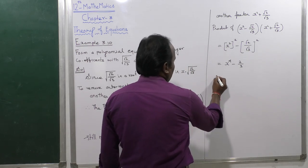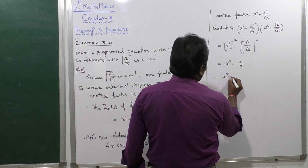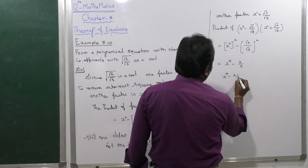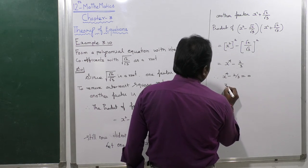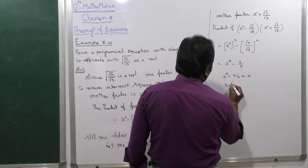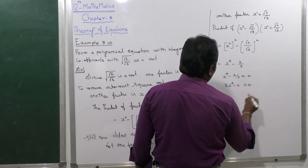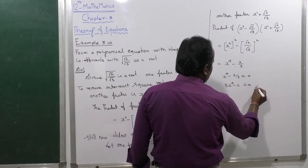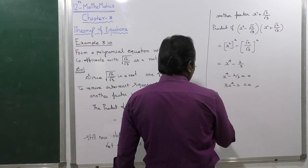Therefore the equation is x to the power 4 minus 2 divided by 3 equals 0. Multiplying through by 3, we get 3x to the power 4 minus 2 equals 0. Hence the result.